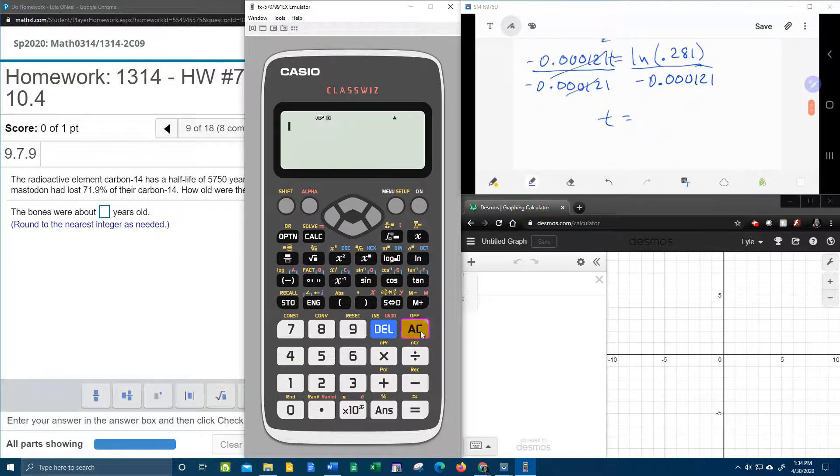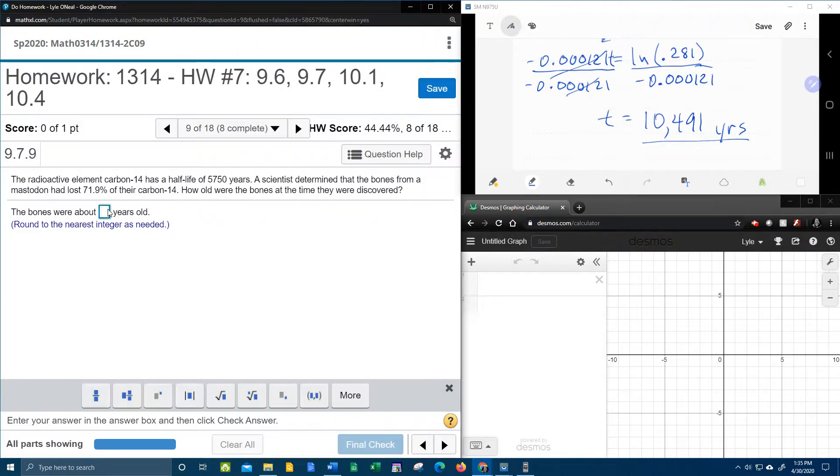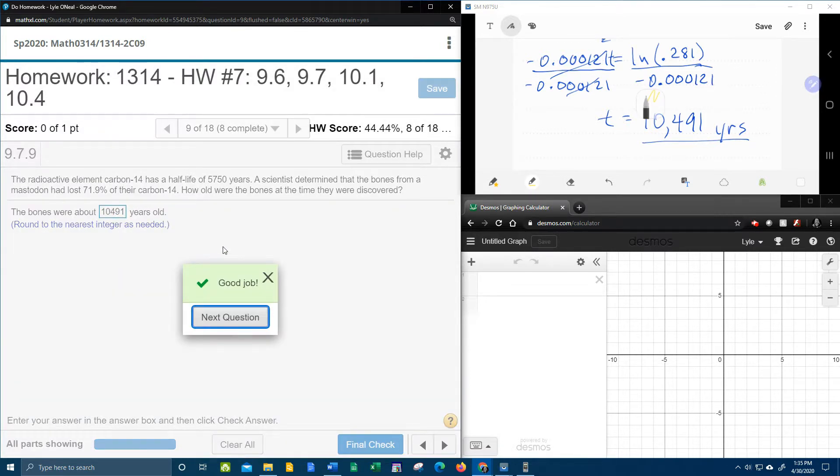And so we're going to, again, need to go to the handy-dandy calculator. And calculate natural log 0.281 over, here we go, long decimal, negative 0.000121, survey says, 10,490.9. Now they do want us to round to the nearest integer. And so that means that that 9 is going to make that 0 round up. So 10,491 years is how old these bones are. And let's see if I'm right. 10,491. Man, that was a long, tough problem.